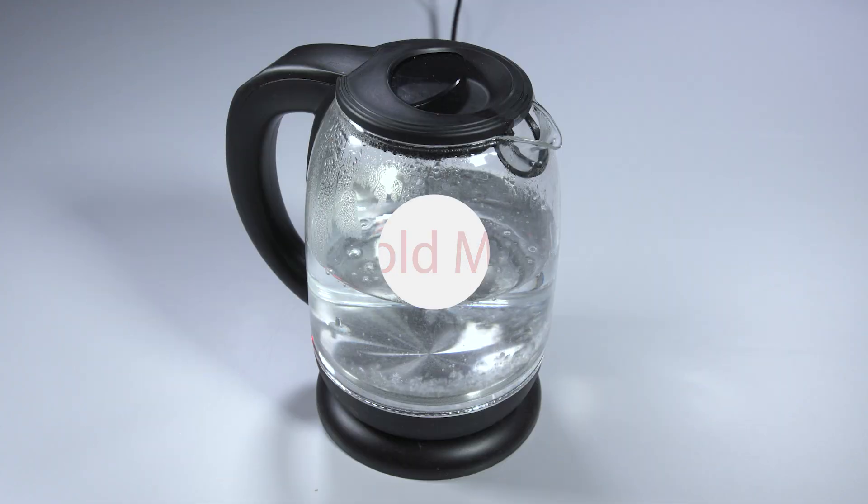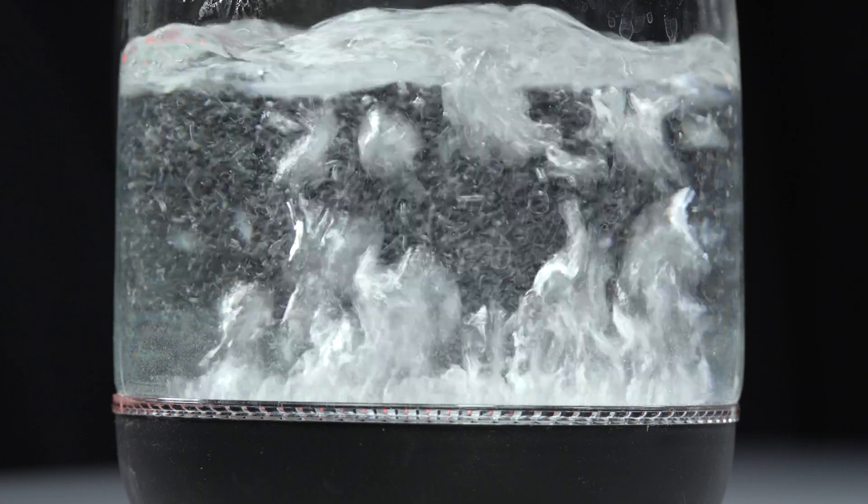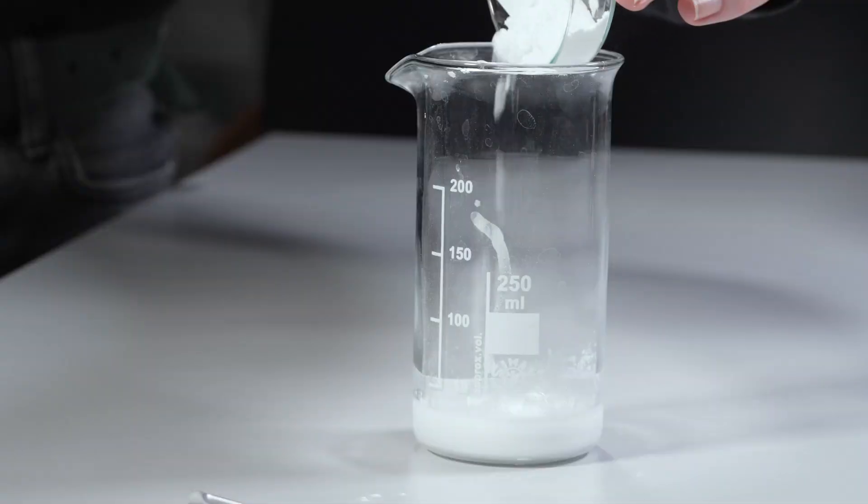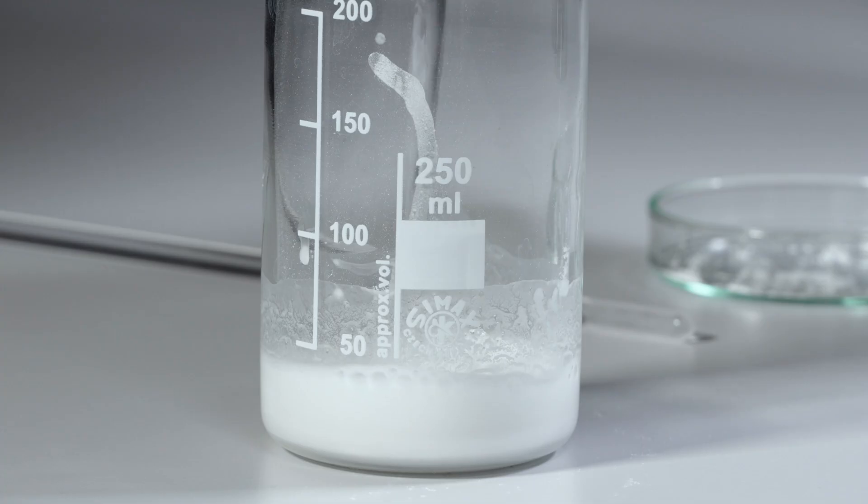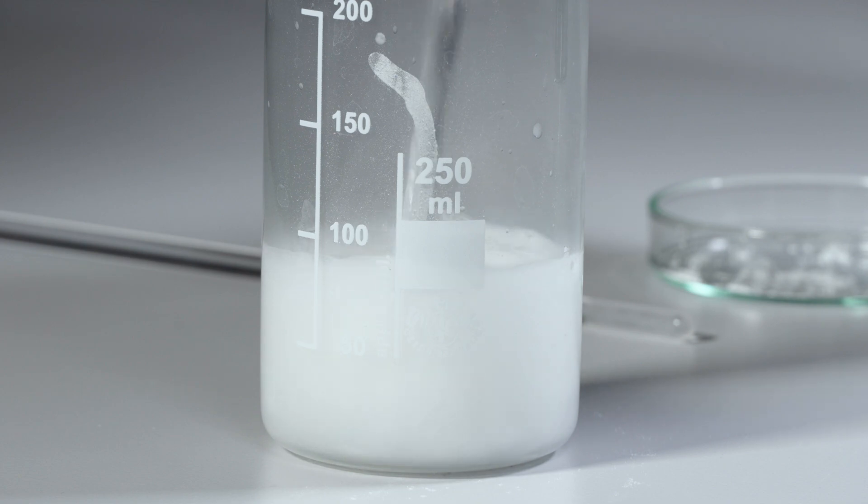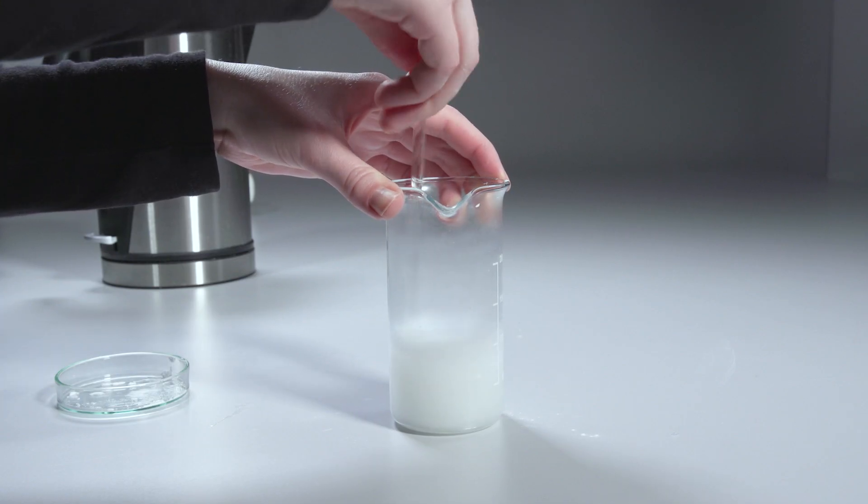Paste can also be prepared using boiling water from a kettle. In this case, the starch powder is added into a small amount of cold water and then filled up with the remaining amount of boiling water, stirring thoroughly.